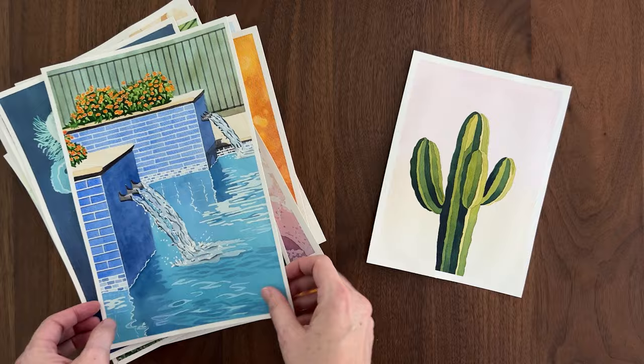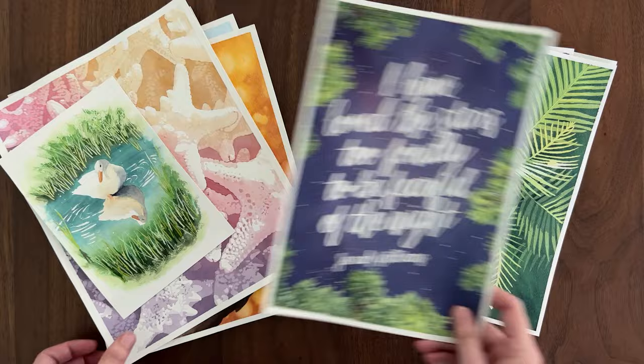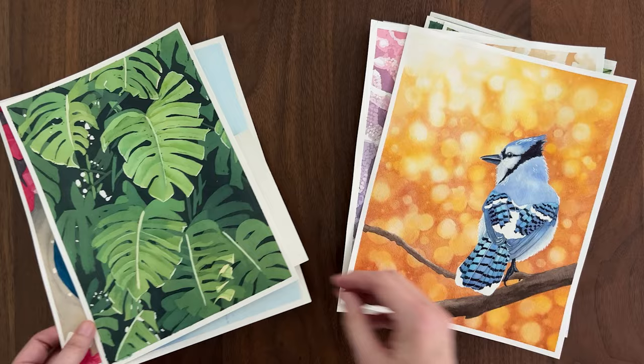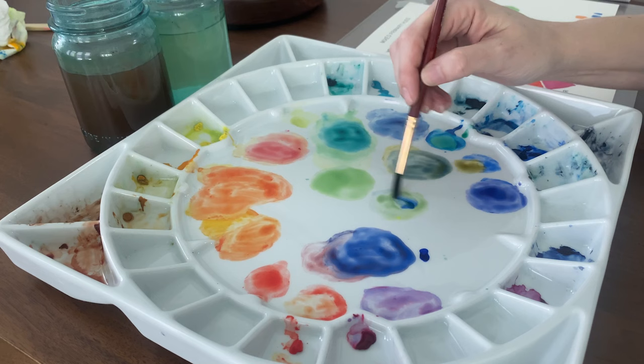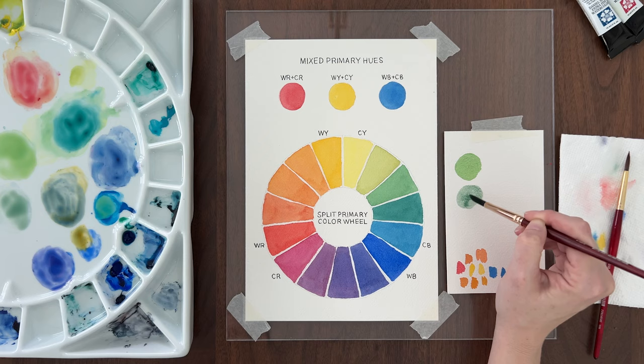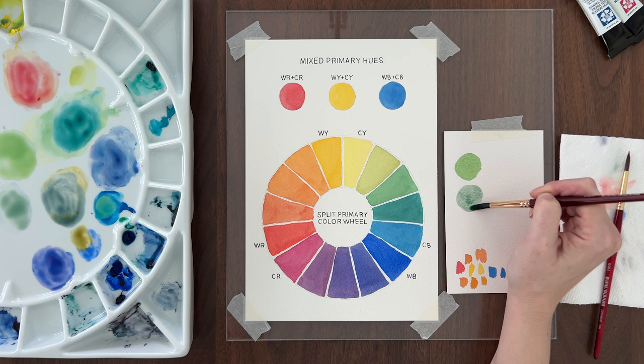But what about mixing more natural, realistic colors for landscapes or florals or animals? You know, all the things that we love to paint with watercolor? Well, you need to be able to create a wider range of colors. Knowing how to neutralize or desaturate colors is an essential color mixing skill. Let me show you how it's done.